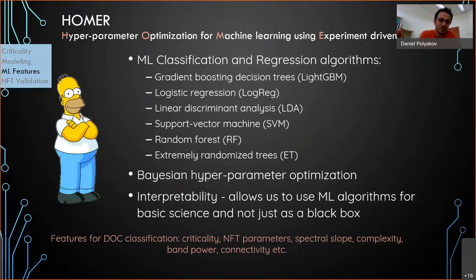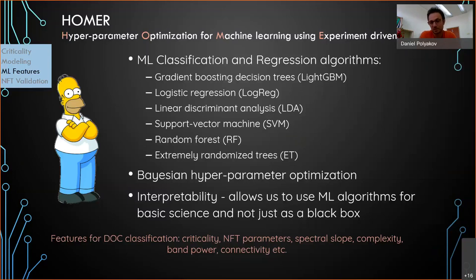My plan is to use this platform for discrimination of disorders of consciousness states, using features from criticality such as alpha and sigma, neural field theory parameters — especially gain parameters — spectral slope, complexity, and more conventional features such as band power or connectivity.